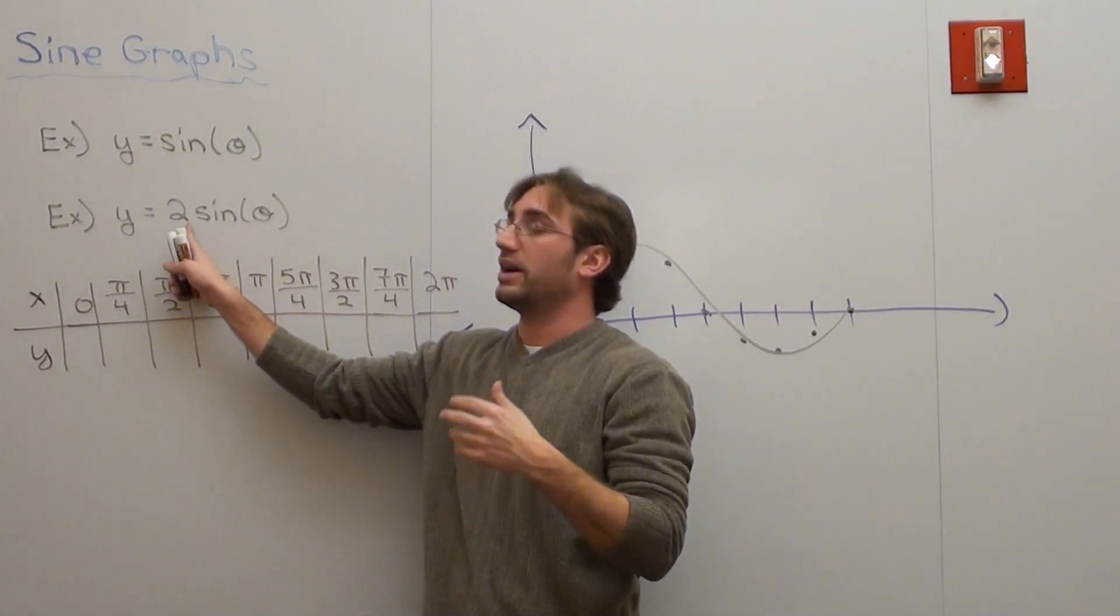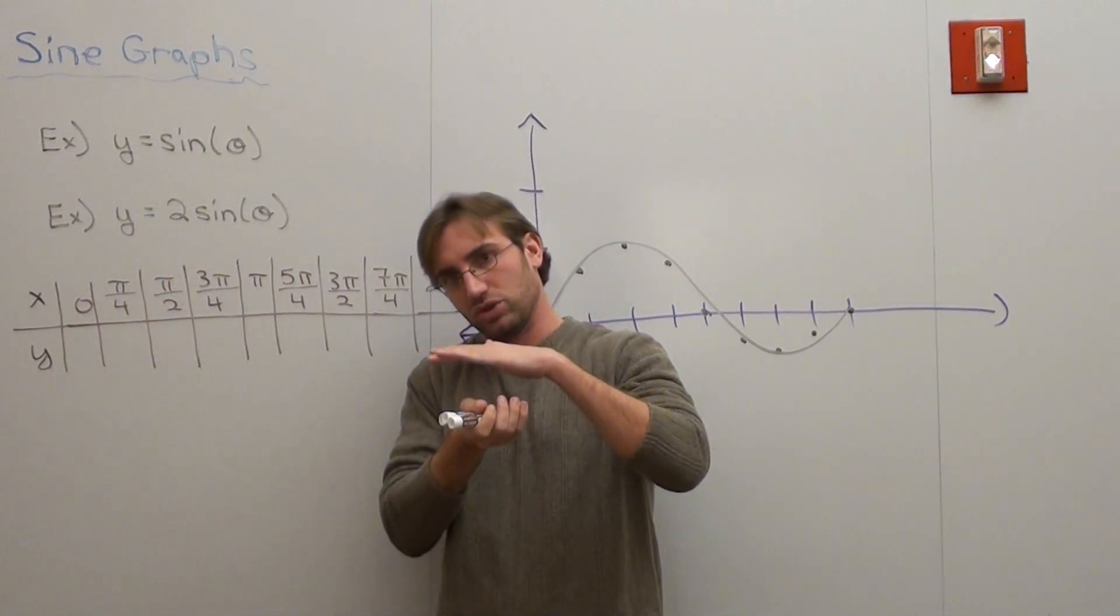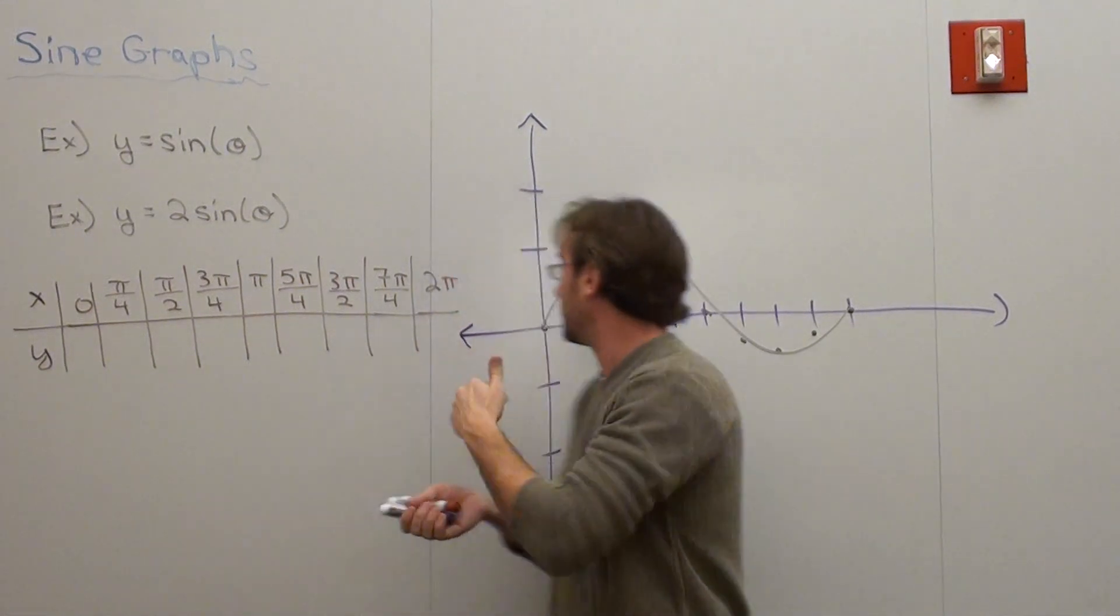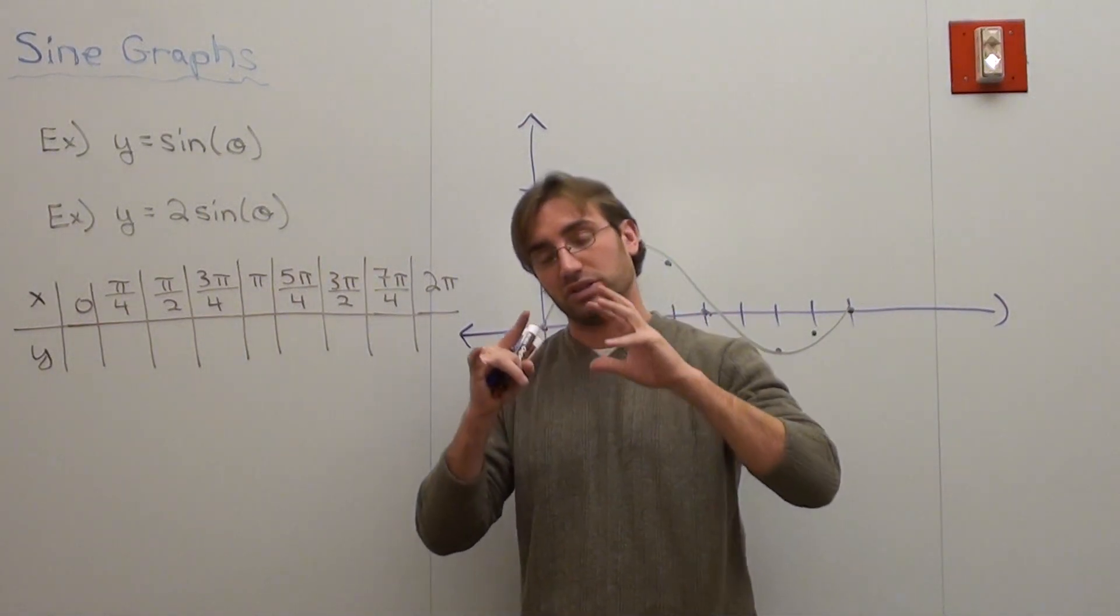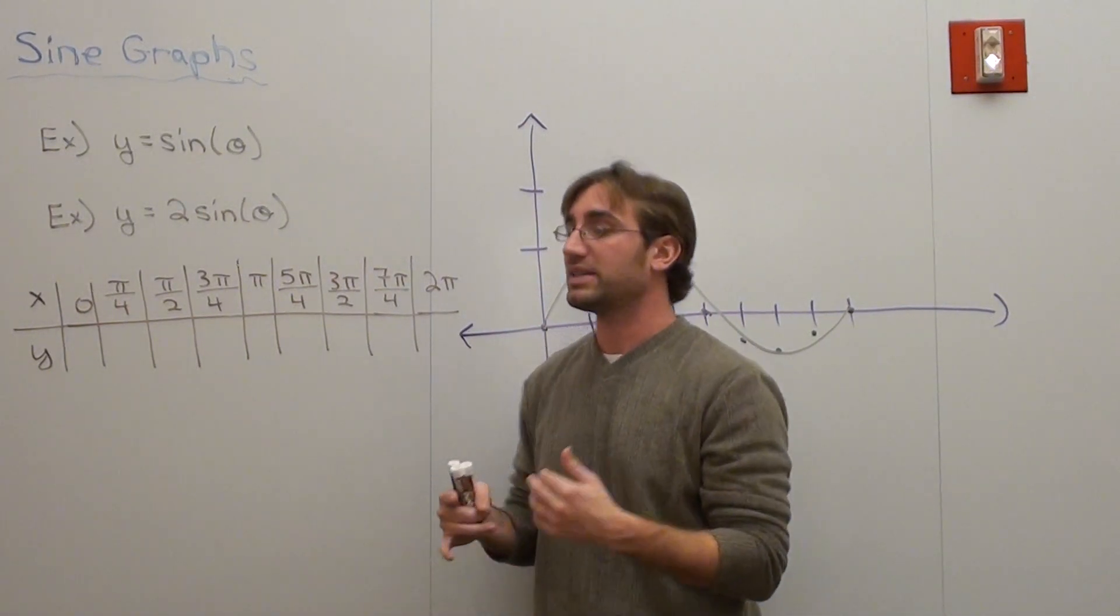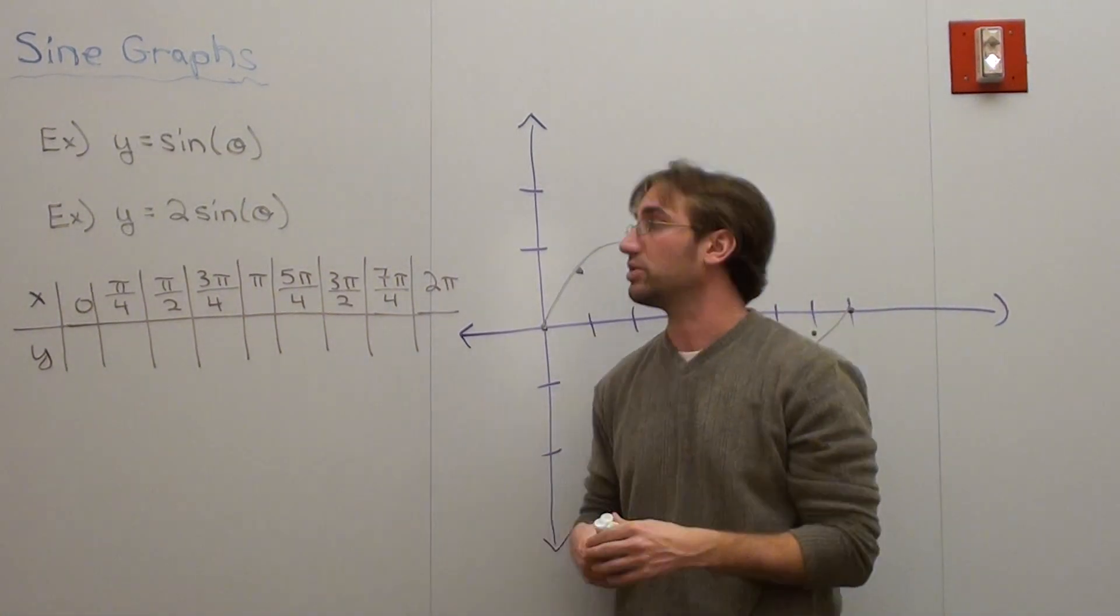If I multiply a number in front of the sine that's lower than one, then the graph is going to go lower both on its high point and its low point. What I'm doing is affecting its amplitude. Basically how high or how low the graph goes affects its amplitude.